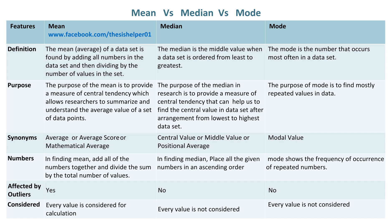Synonyms of mean are average, average score, or mathematical average. Synonyms of median are central value, middle value, or positional average. Synonym of mode is modal value.